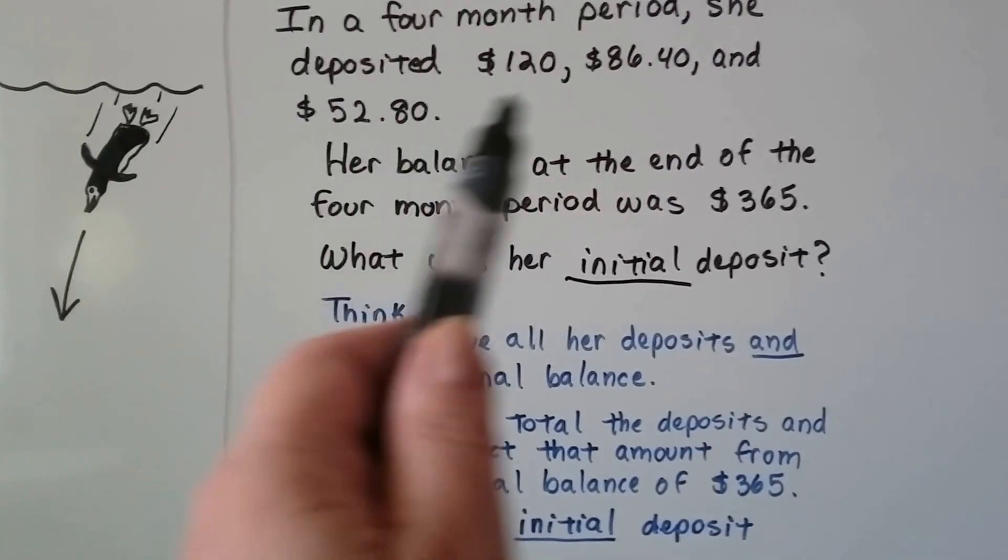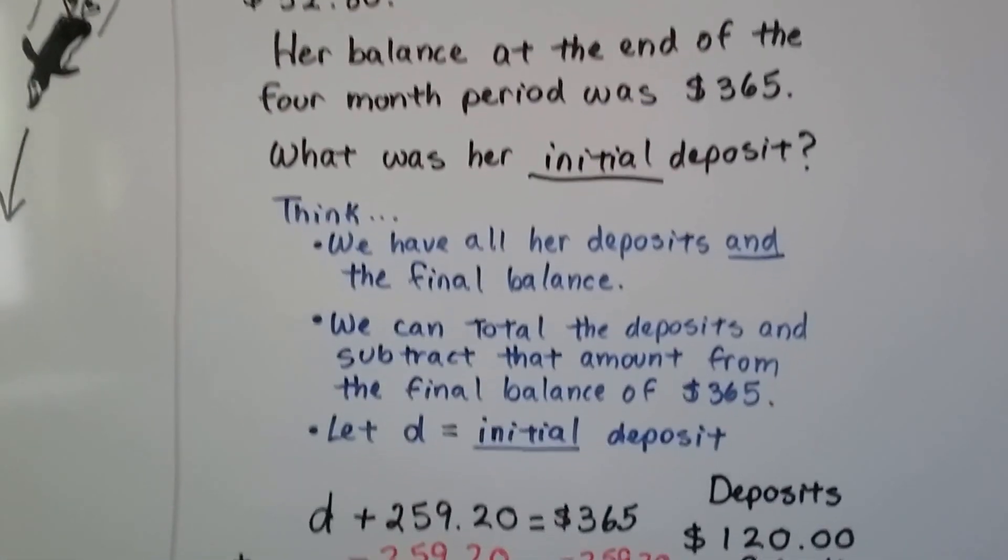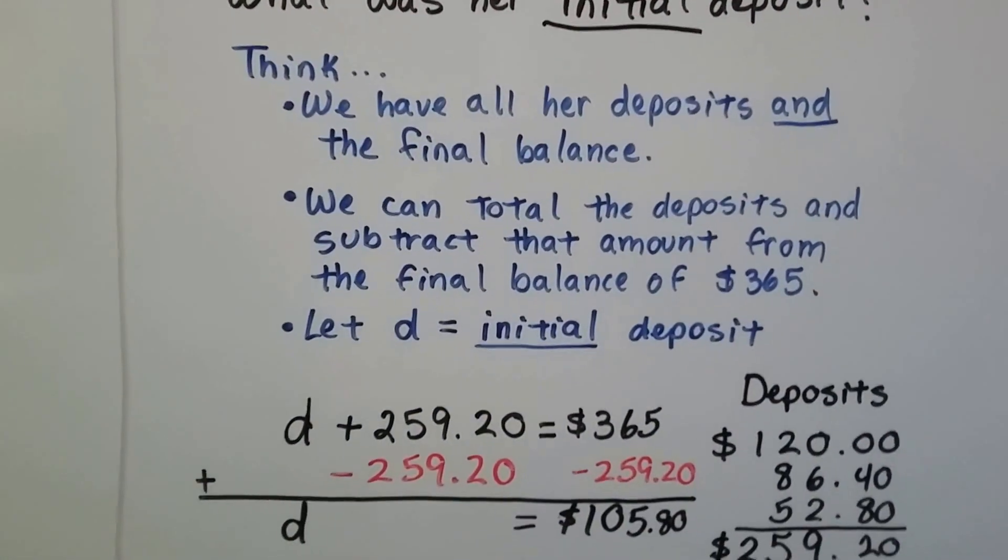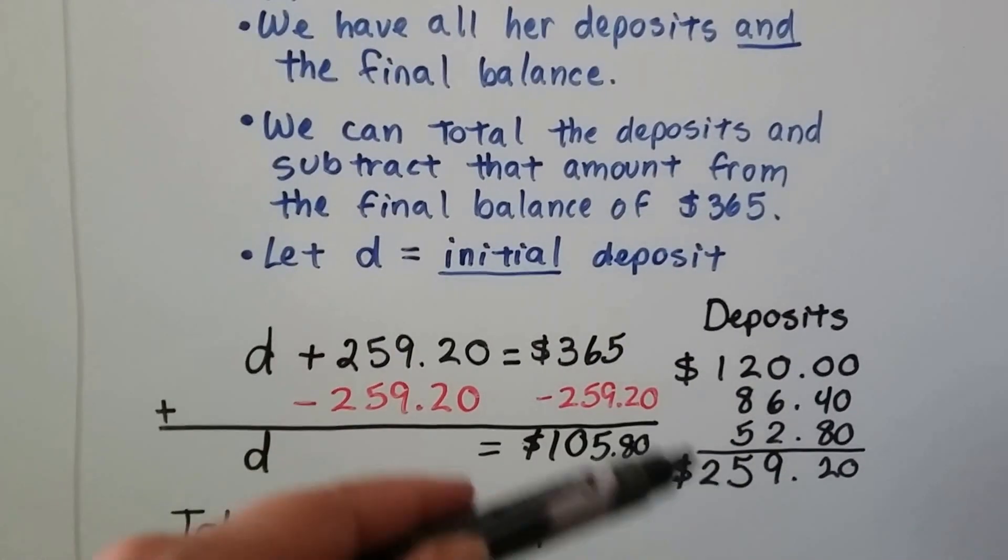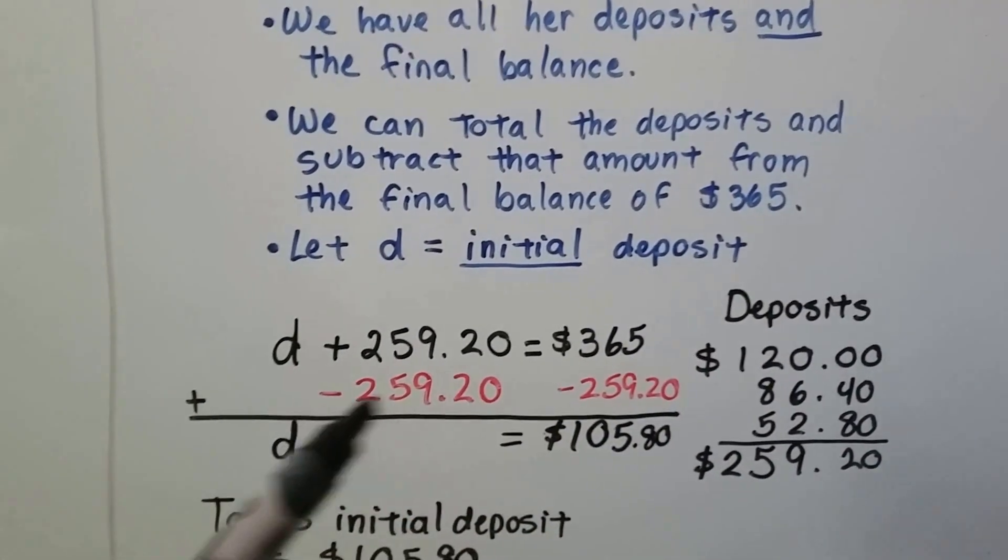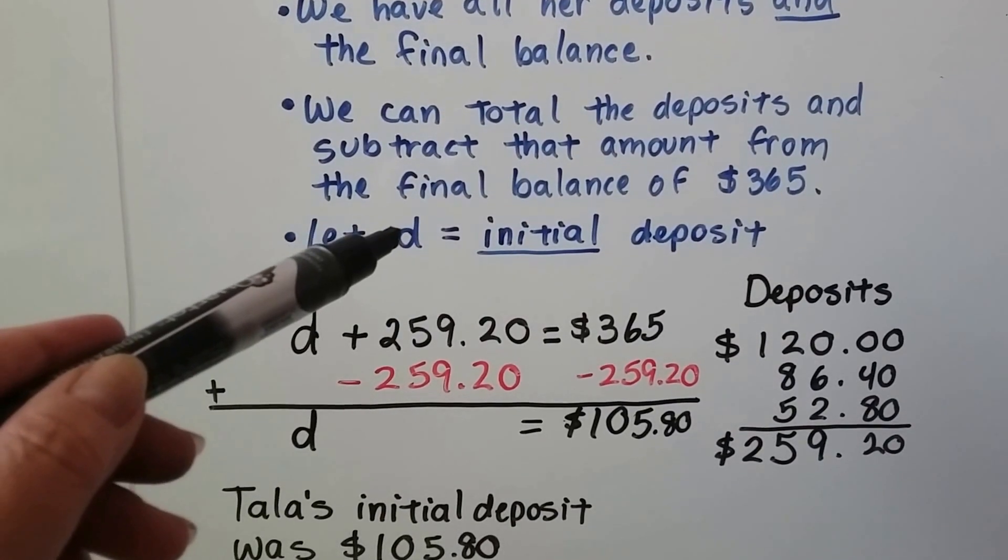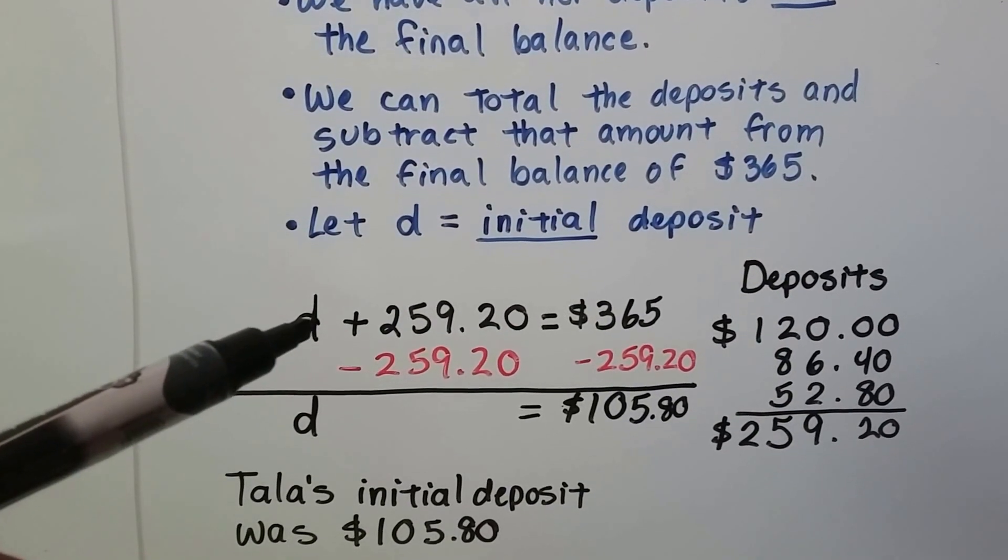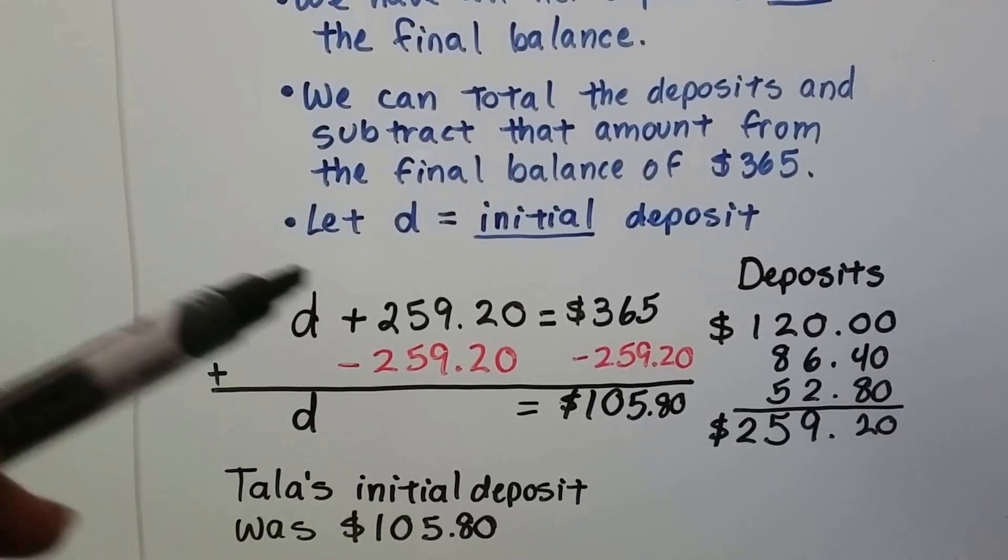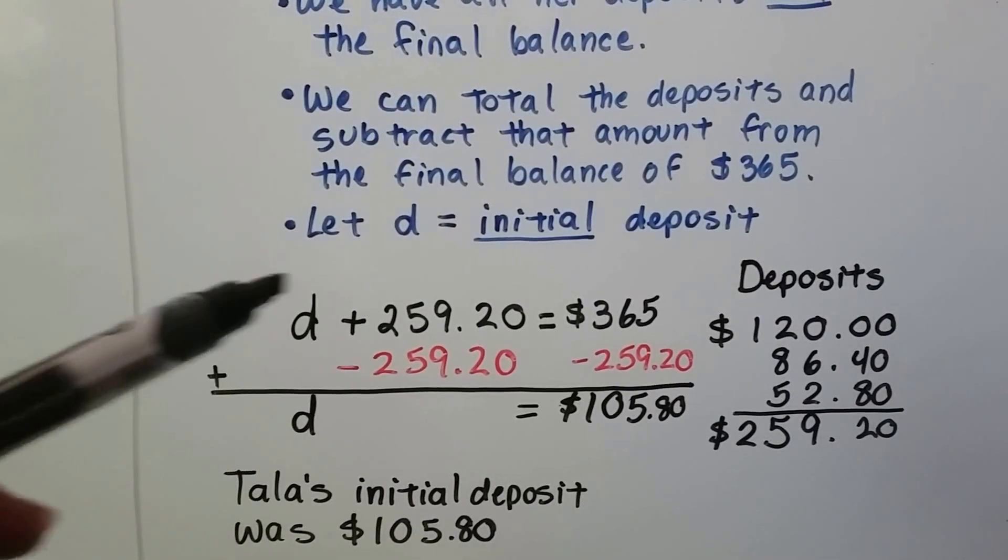But, because these were all deposits, and they're all being added together, we have all our deposits in the final balance, we can just total the deposits and then subtract that amount from the final balance of $365. So, we're going to let D be that deposit, that initial deposit that we're trying to find. What was her opening bank account amount?